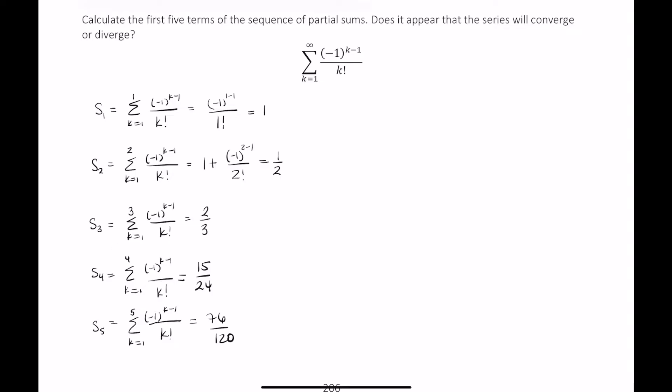Alright, so I'm going to write these down as decimals now just to see what's happening. Well, this one we know is 1 half is 0.5. Here we have 0.6 repeating forever. The fourth partial sum is 0.625. And the fifth partial sum is 0.6 and then 3 repeating forever.